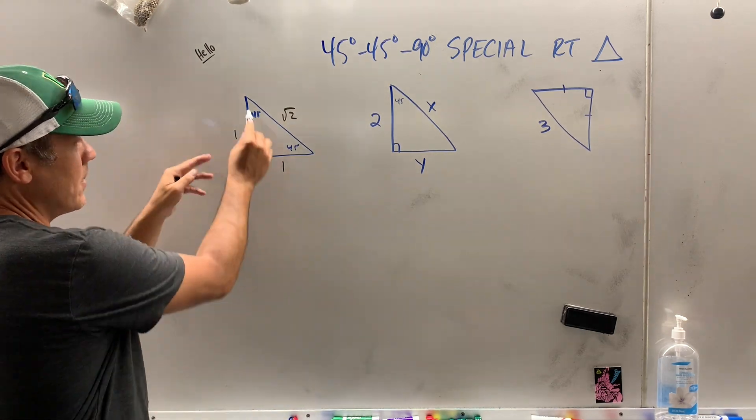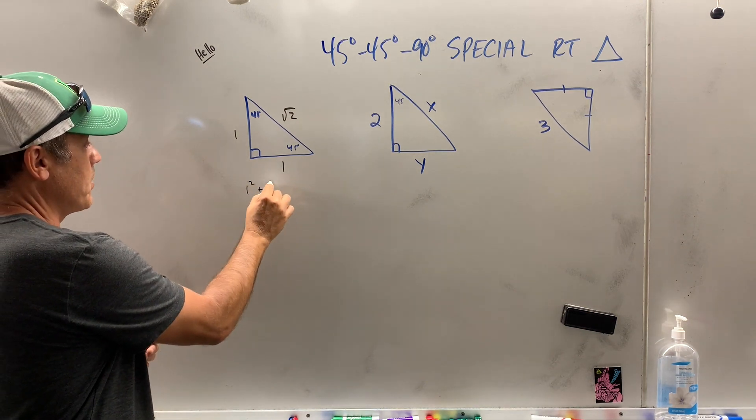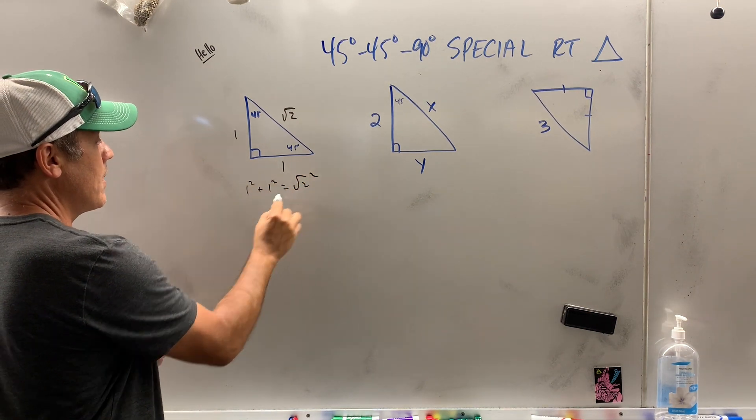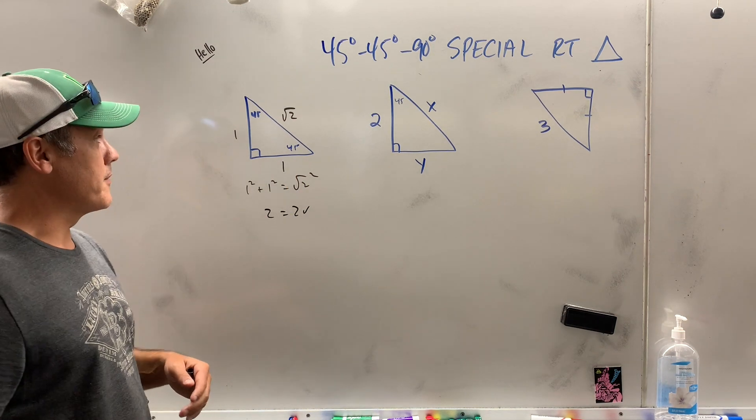How do I know I got it right? Well, it's a right triangle. The Pythagorean theorem will hold up: 1 squared plus 1 squared equals square root of 2 squared. That's 2 equals 2. I know I got it right.